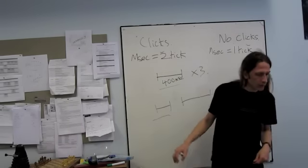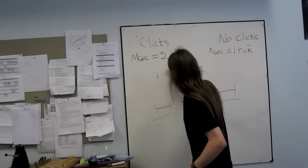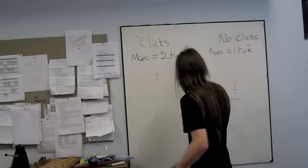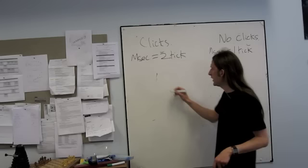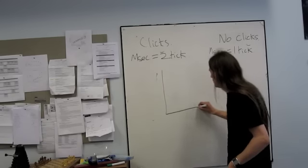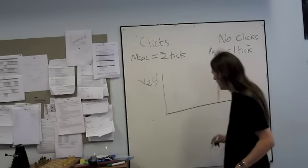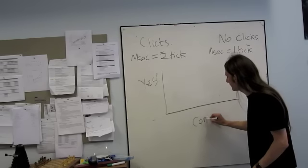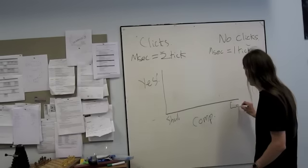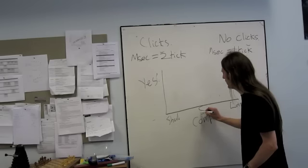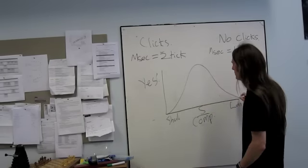And if you remember, what you end up with in the data is a temporal generalization gradient. So we have here how often they say yes, and here we have the comparison duration. Going from short here to long here, and just here is when it actually is the same duration as the standard. And you get something like this.